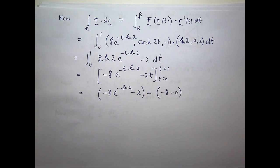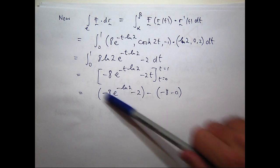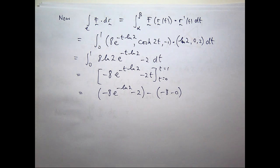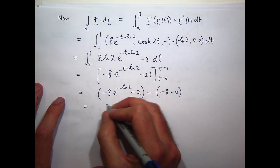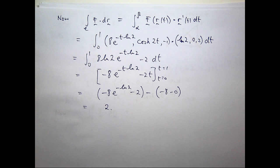Okay, now I can clean up that e to the minus log 2 a little bit. e to the minus log 2 is 1 over e to the log 2. And what's e to the log 2? 2. Right? So, this is going to become minus 8 over 2. Minus 4. So, our answer will be 2.